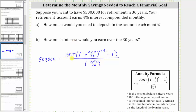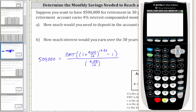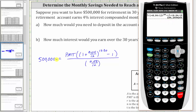Now to solve the equation for PMT, we will evaluate this quotient on the calculator. We have open parenthesis, then one plus 0.04 divided by 12, close parenthesis, raised to the power of 12 times 30, which is 360, minus one, close parenthesis — that's the numerator — divided by 0.04 divided by 12. The right side is going to be PMT times 694.0494044.